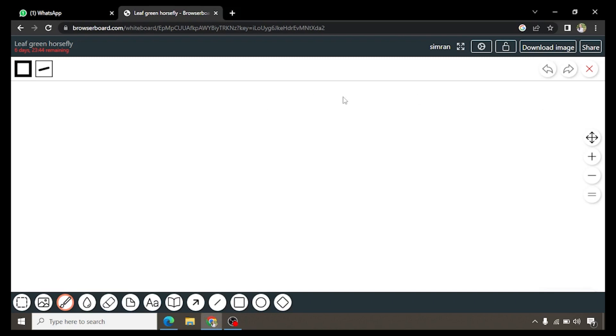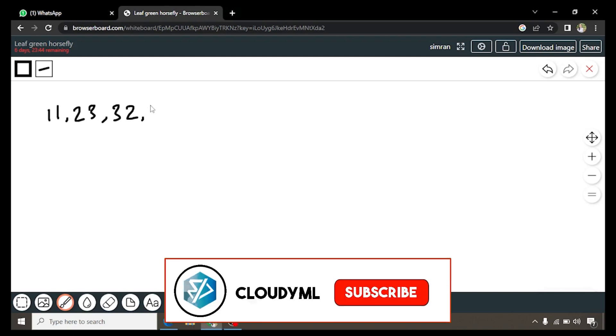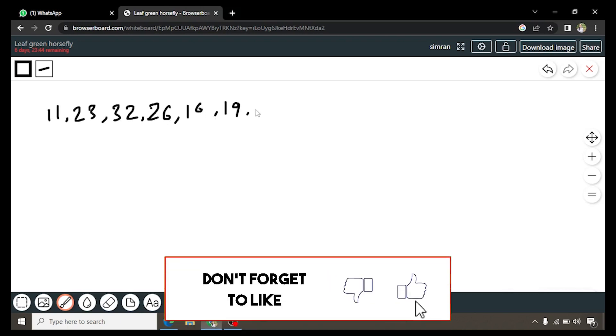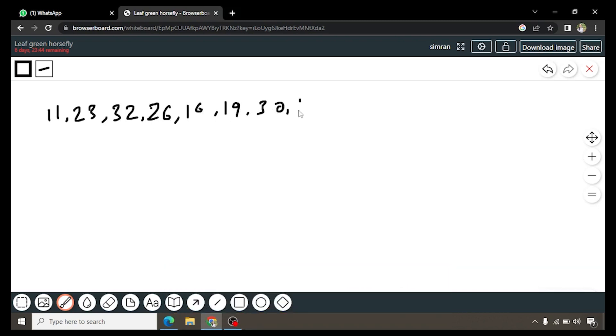The values are 11, 23, then we have 32, then 26, 16, 19, 30, 14, 16, and 10. So basically this is our data set.